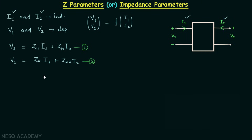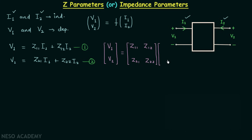From these two equations we can write one matrix form: a two-by-one matrix with elements v1 and v2 equals the product of a two-by-two matrix with elements z11, z12, z21, z22, and a two-by-one matrix with elements i1 and i2. This two-by-two matrix is known as the impedance matrix.